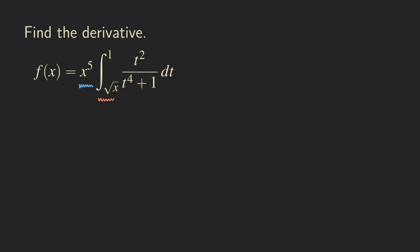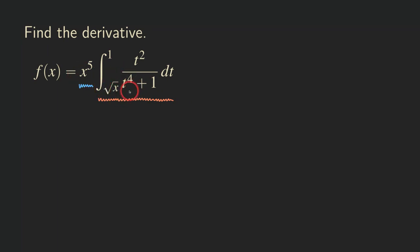This function is defined in the form of an integral. As you can see, that's a product of two functions. When we want to differentiate, we need to use the product rule. But before we go into differentiating the whole function, we need to rewrite this integral so it's in the right form that we can apply the FTC on.